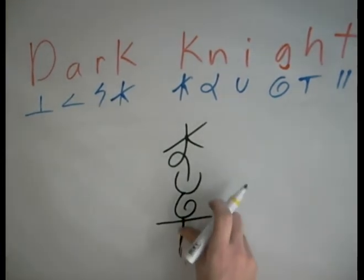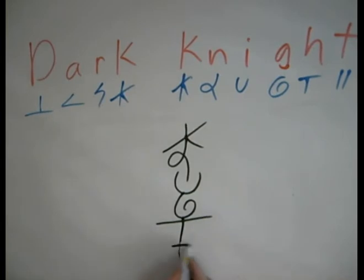Or you could put it like... Actually, I prefer to draw the T's like this at the bottom, so they're a little more even as opposed to lopsided. So we've got knight.